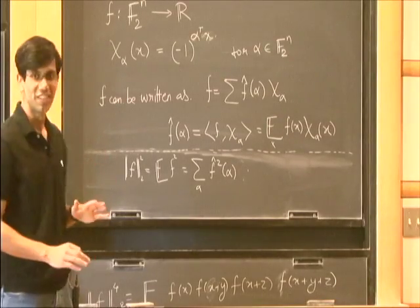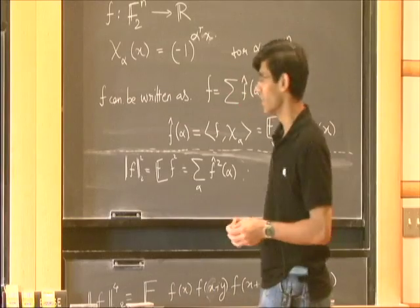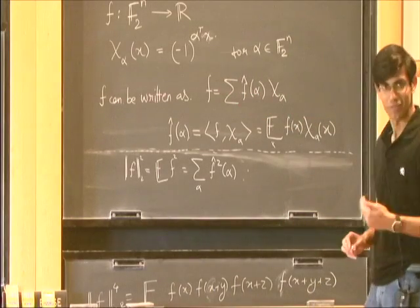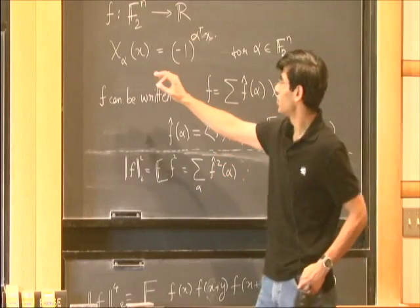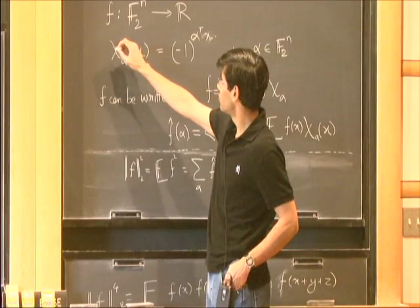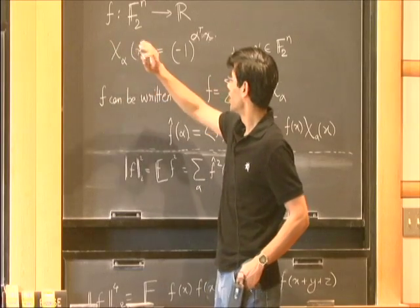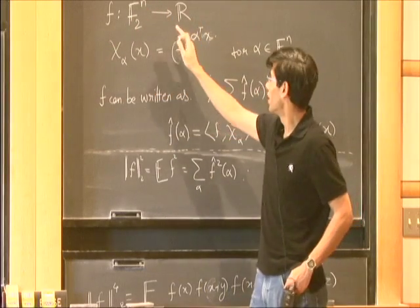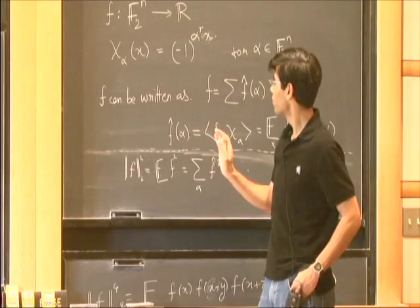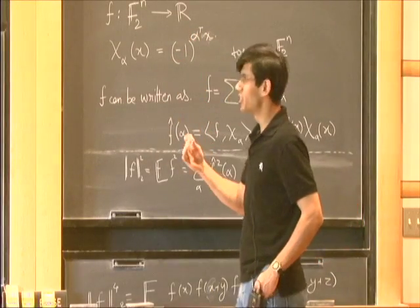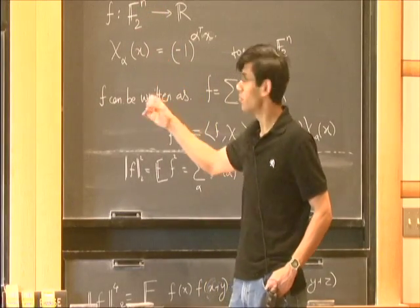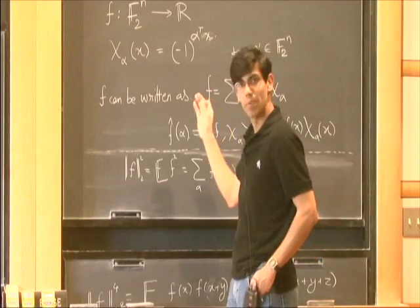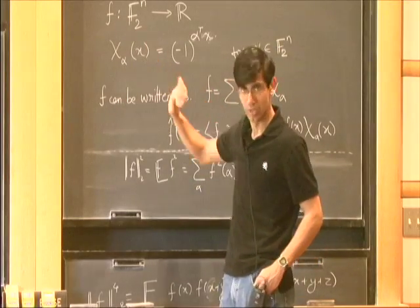I'll use a few notions from Fourier analysis in the talk, so let me define them before we start, and then I can mention more about the results. This notation will only be concerned with functions from F_2^n, and functions which are real-valued. Whatever I say can be made to work over F_p^n for any small p — the constants will have a dependence on p — but I'll only talk of F_2 in this entire talk.